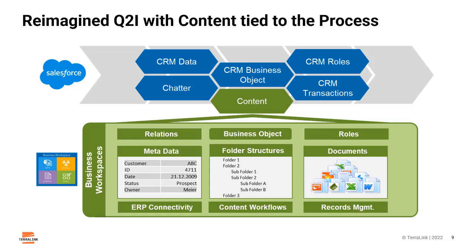The OpenText Extended ECM platform became the connecting system using business workspaces between the CRM, ERP, and service delivery platforms. With business workspaces and process automation capabilities in the Extended ECM platform, the reimagined quote-to-installation process with content tied to the process could now support a final sales offer for a new customer, triggering automatic customer requests from the CRM system to the ERP system. Customized products requested in the quote would be auto set up in the sales order master with pricing.